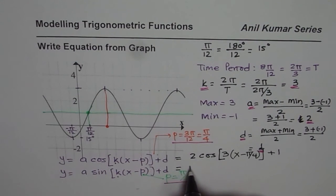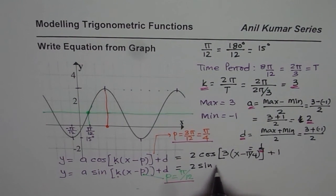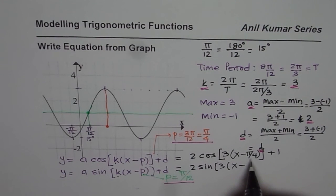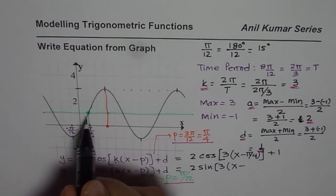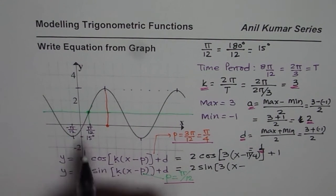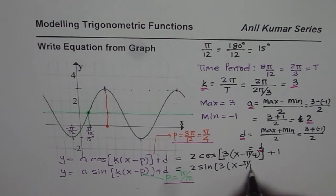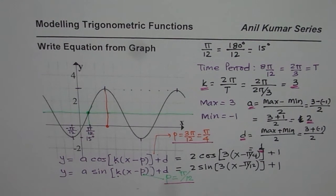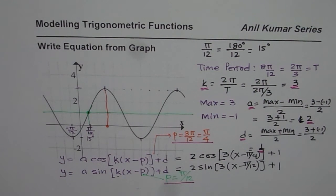For sine function, we will write 2·sin(3(x - π/12)) + 1. So that is how you can write sine function and cosine function for the given wave. I hope that helps. Thank you and all the best.